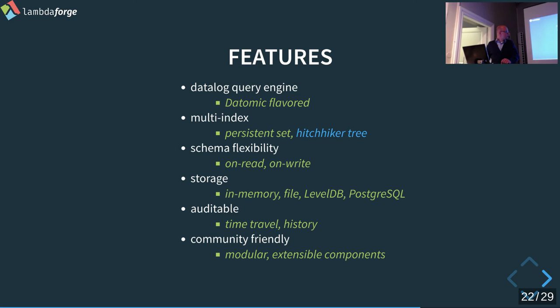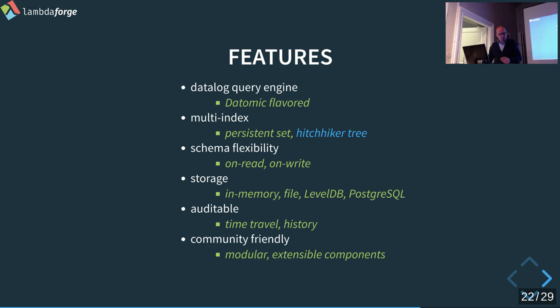DataHike is also auditable — you have time travel. You can see the whole history of data, even if you retract something, and you can get the database at a certain point in time. We are also community-friendly: people are using and extending it. For instance, the Postgres storage layer was implemented by someone on GitHub — they said 'I did it, here's the pull request,' and now we have it. And since my release post on Friday, someone already implemented storage for S3.